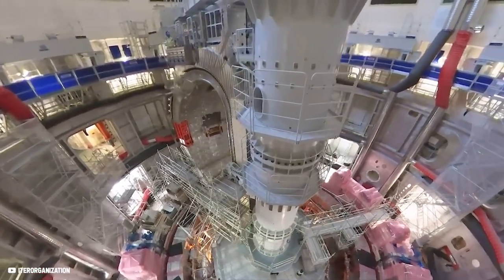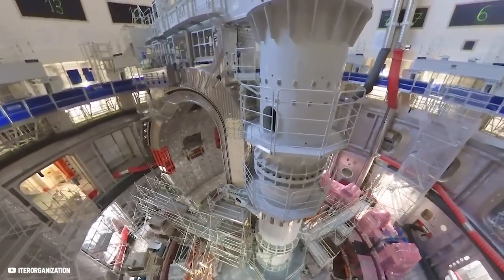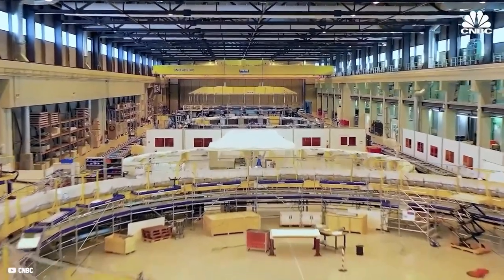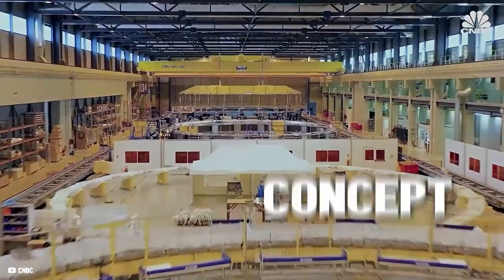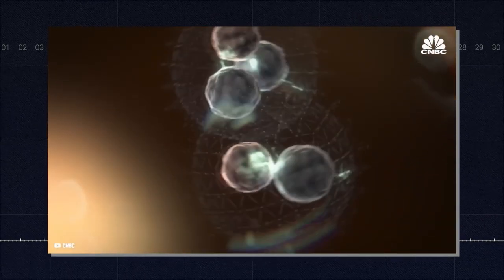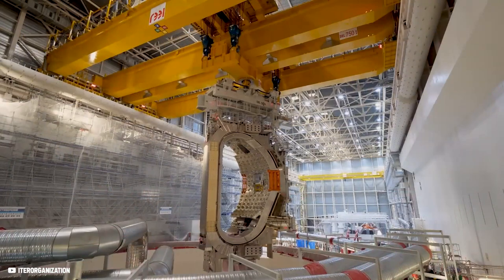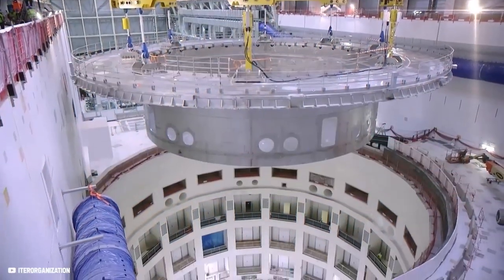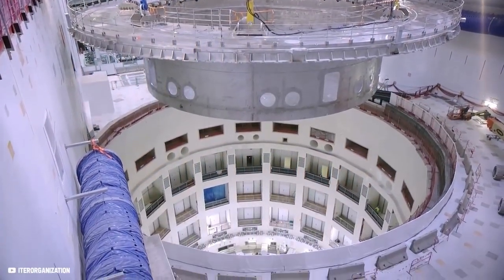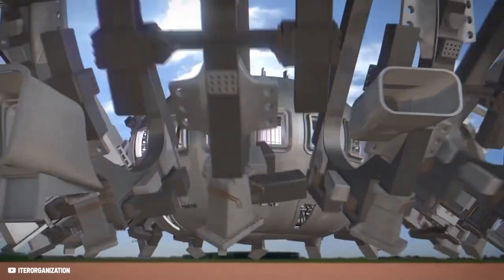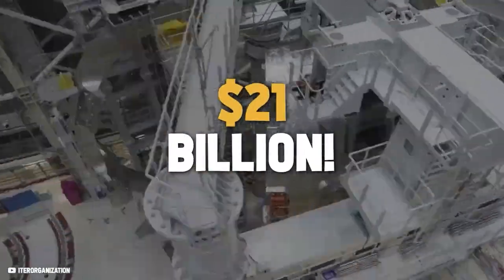The fusion reactor ITER is currently being constructed in a collaborative effort of several countries in France. Its purpose is to demonstrate the functionality of the so-called Tokamak concept. This concept belongs to the magnetic confinement method and involves a total of 24 gigantic field coils weighing up to 400 tons. But this project turns out to be extremely costly. The design and construction of the reactor itself exceeded the preliminary estimated costs by many times, reaching and even exceeding 21 billion dollars.